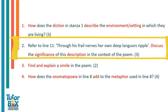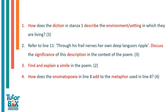Question two refers to line 11: 'Through his feral nerves, her own deep languor ripple.' The answer is that the act of breastfeeding not only provides nourishment for the child, but also transmits to him the mother's feelings and attitude. The word 'languor' suggests that the mother is weary and despairing of the situation she's in. It might suggest that the mother transmits her strength to the child so that one day he will free his people from oppression. She is very tired of being oppressed, and that is transmitted through the breastfeeding to the baby, along with her hope that her son could end it.